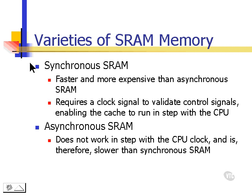There are two varieties of SRAM: synchronous SRAM and asynchronous SRAM. Synchronous SRAM is faster but more expensive — it requires a clock signal to validate its control signals, which enables the cache to run in step with the CPU. Asynchronous SRAM does not work in step with the CPU clock and is therefore slower. In the next section, we'll compare DRAM with SRAM.